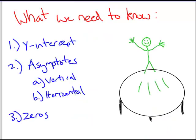When we're talking about rational expressions, the three things we're going to look for are the y-intercept, asymptotes — there are vertical asymptotes and horizontal asymptotes — and zeros. We already know how to find zeros; that's what we've been doing in the past few sections.